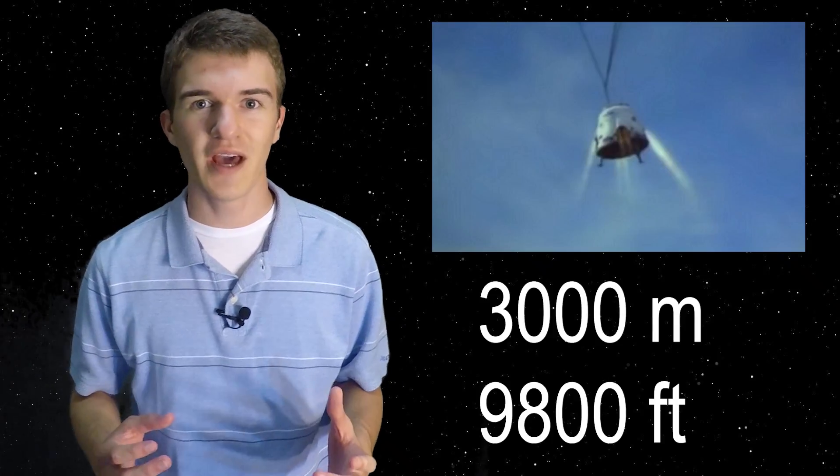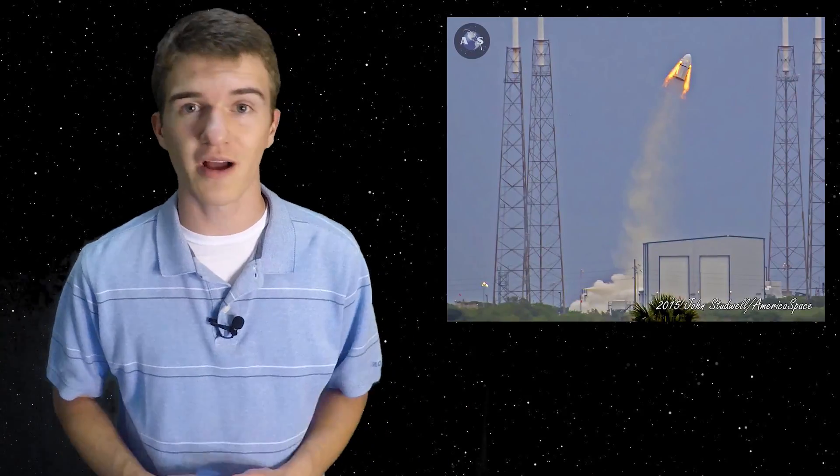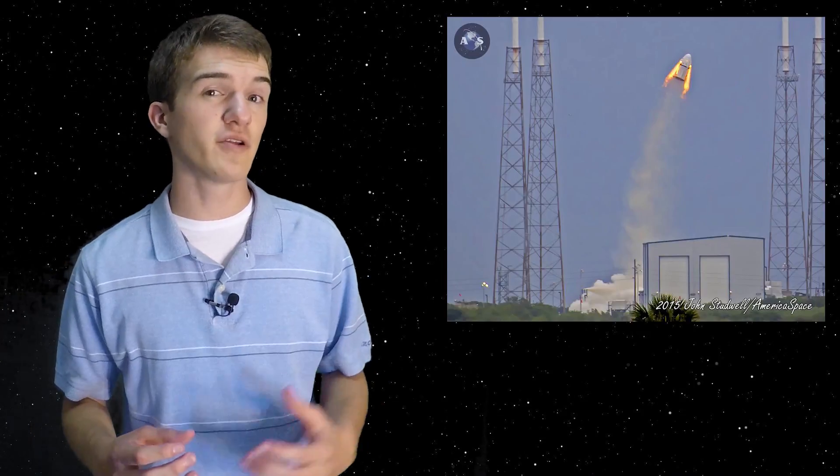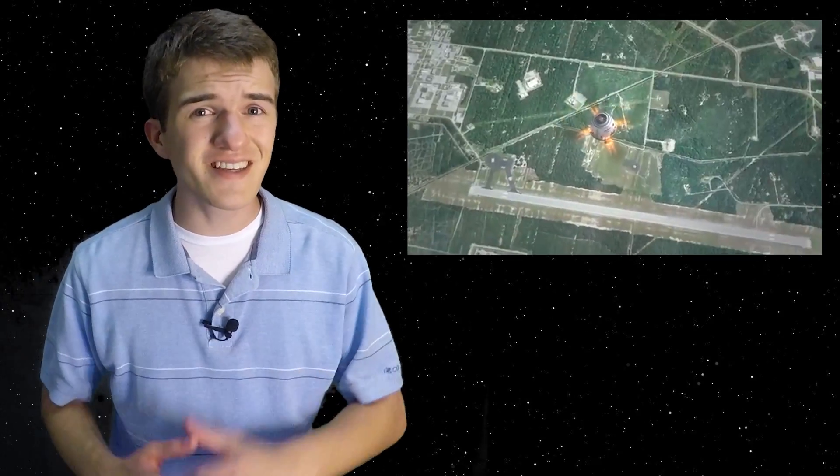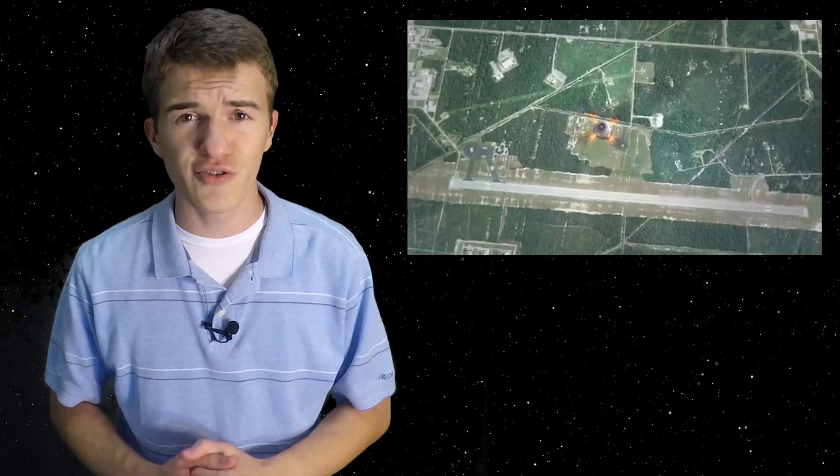At this point in 2015, SpaceX got approval from the FAA to do a lot of testing on Dragonfly, including dropping it from a helicopter at 3,000 meters in altitude, and using a combination of parachutes and retro rockets to safely land in a certain location. Then they would eventually just do a liftoff and then use parachutes and retro rockets, and finally, they would try to do just a liftoff and landing solely using retro propulsion. There would be proposed anywhere from 30 to 60 test flights of vertically landing the Dragon capsule.